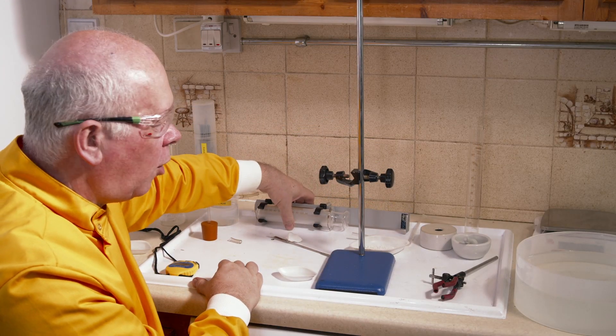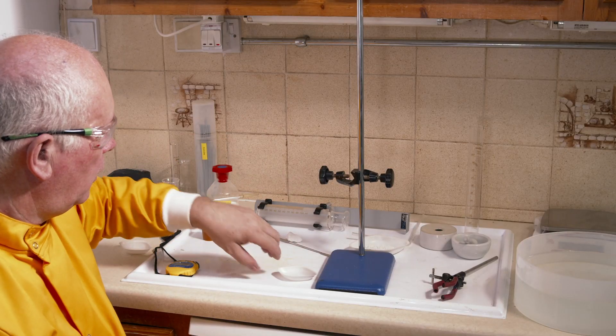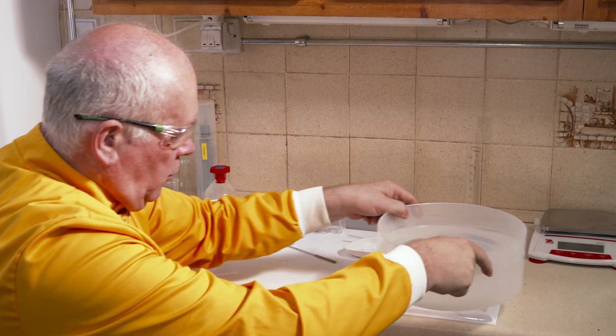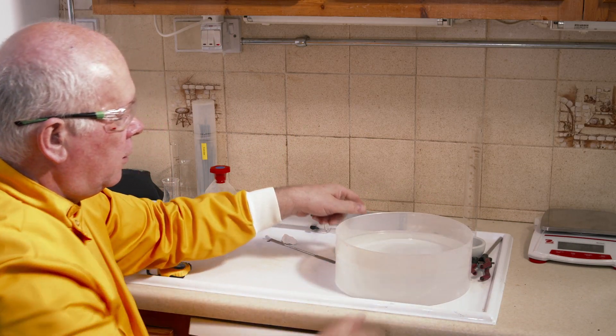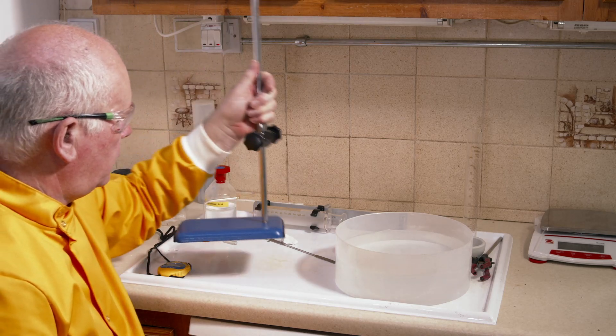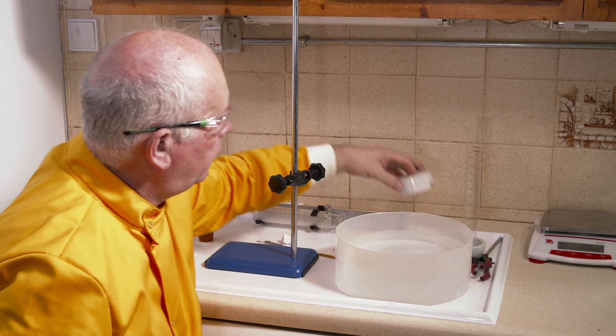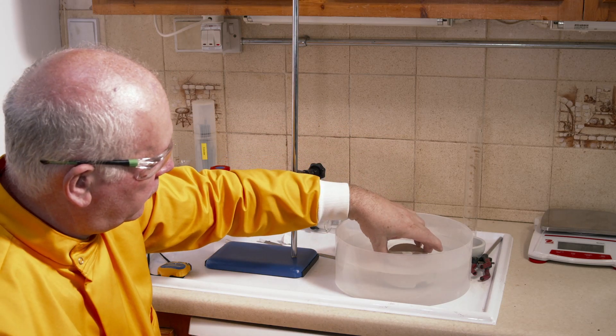Our third way is probably the most commonly used because in many schools each student can't be given a balance and gas syringes cost a lot and are very delicate. So in many schools the way this experiment is done is to collect the gas produced over water. I've got here a trough of water, and we're going to take our beehive shelf and place it into the water.